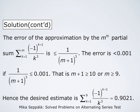The error of approximation by the mth partial sum is bounded by the absolute value of the first term left out. That is, summation k from 1 to m of negative 1 to the power k plus 1 divided by k cubed approximates the whole sum with error less than or equal to 1 over (m plus 1) cubed. This error is less than 0.001 if 1 over (m plus 1) cubed is less than 0.001, that is if m plus 1 is greater than or equal to 10, or m greater than or equal to 9. Hence the desired estimate is summation k from 1 to 9 of negative 1 to the power k plus 1 divided by k cubed, which is approximately 0.9021.